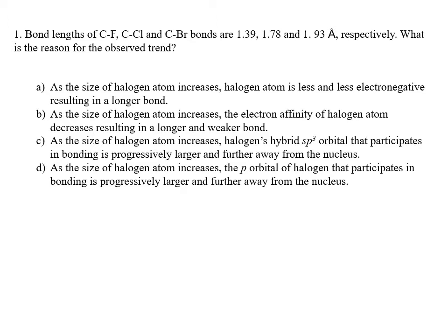Answer A: as the size of the halogen atom increases, the halogen atom is less and less electronegative, resulting in a longer bond. It is correct that with increasing size, electronegativity decreases, but that's not directly related to bond length. That means that this is not the correct answer.